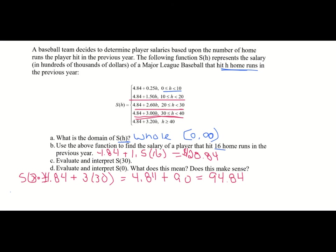Our last one is S of 0. If they got zero home runs, we do 4.84 plus 0.25 times 0. Anything times 0 is 0, so we get 4.84 hundred thousands of dollars. Does this make sense? Yes — in the American League, pitchers don't have at-bats so they wouldn't get home runs, or a player was injured. It's possible they got no home runs, so S of 0 makes sense. And that's it for our video for the second half of Module 4 — have a great day!